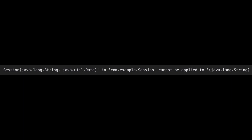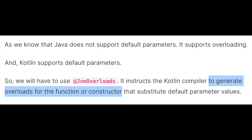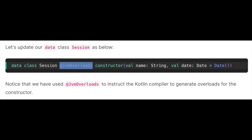It will give us the error: Session(String, Date) cannot be applied to (String). This is because Java doesn't support default parameters — it supports overloading — whereas Kotlin supports default parameters. So what do we do? We will have to use the JvmOverloads annotation, because it instructs the Kotlin compiler to generate overloads for the constructor that substitute the default parameters.